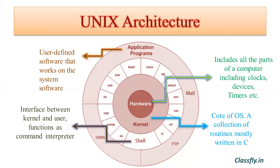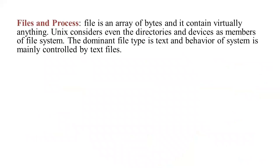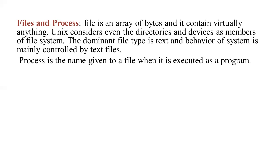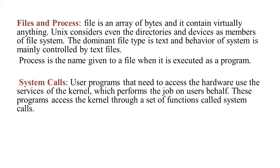Application programs are user-defined software that works on the system software. There are also files and processes which are part of UNIX architecture. A file is an array of bytes and it can contain virtually anything. UNIX considers even directories and devices as members of the file system. The dominant file type is text, and the behavior of the system is mainly controlled by text files. A process is the name given to a file when it is executed as a program — it is simply a time image of an executable file.